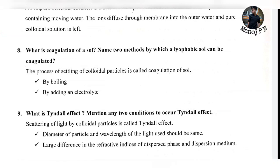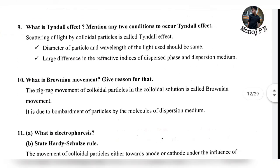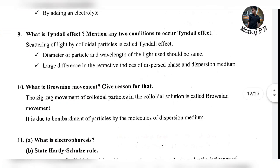What is coagulation of a colloidal solution? Name two methods by which lyophobic solution can be coagulated. Coagulation is the process of settling of colloidal particles. Methods: by boiling, and by adding an electrolyte.